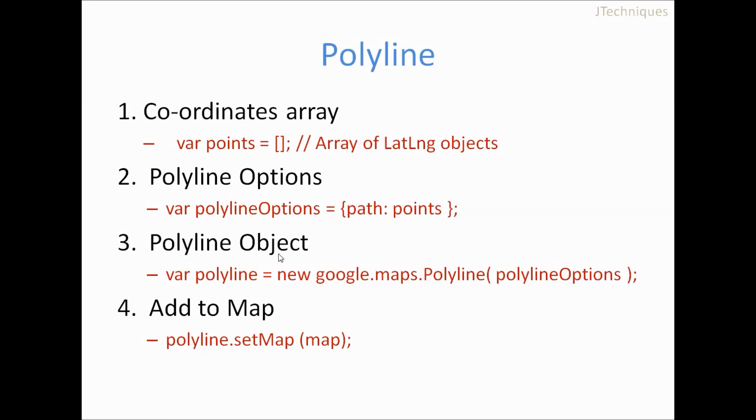And the third step is you create the polyline object using google.maps.polyline. And the last step, you set this polyline map to it. Let's look at a demo.